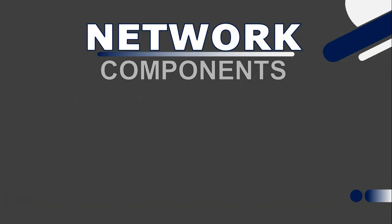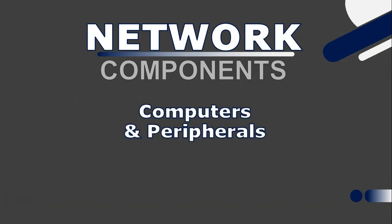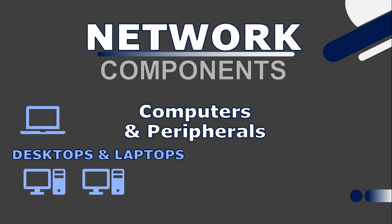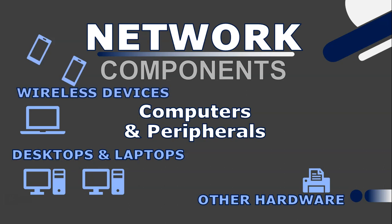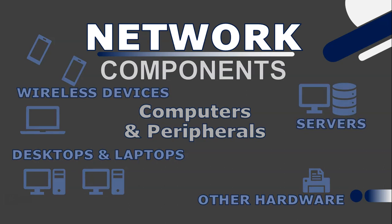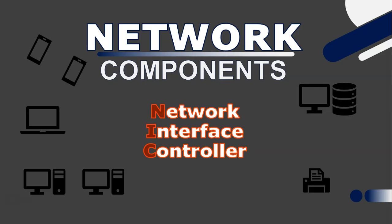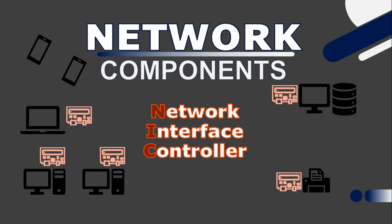The components needed in a network start with the computers and peripherals you want to connect together. This can include desktop computers and laptops, other hardware like printers, wireless devices like tablets and smartphones, and servers. Each of these devices needs a NIC, or network interface controller. This is a hardware device installed in the computer that allows the data the computer wants to send to be transmitted over the network — it's basically where your network cable plugs into.